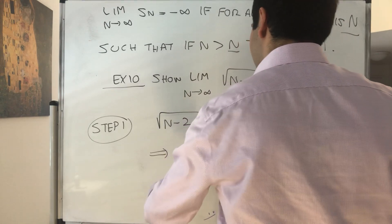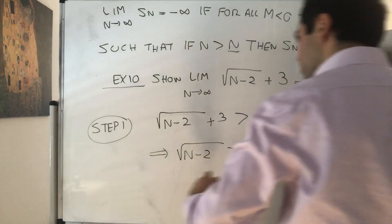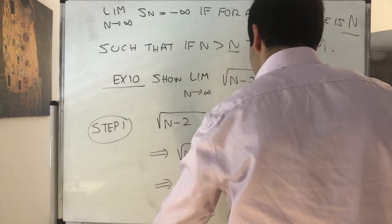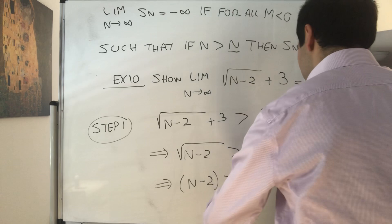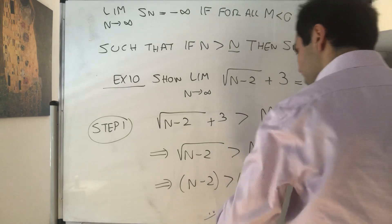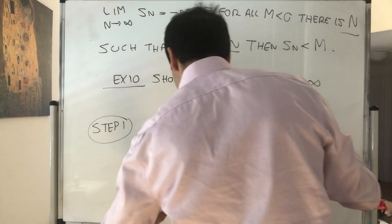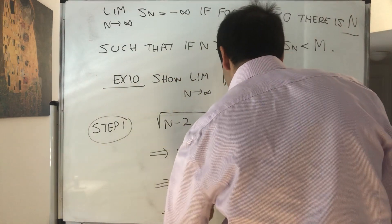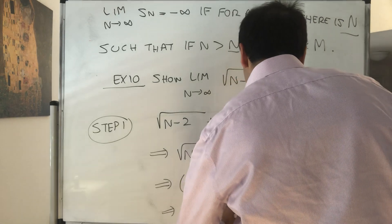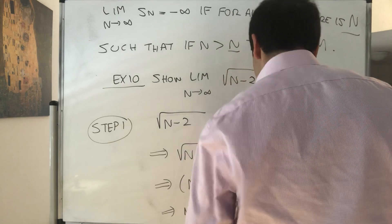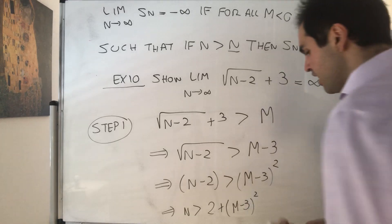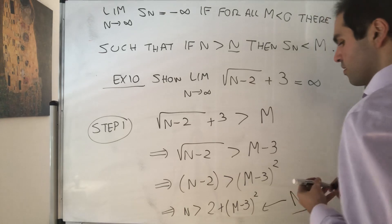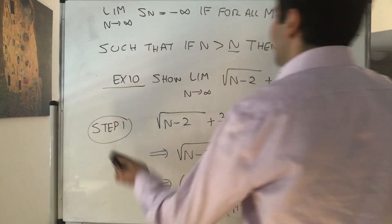So square root of n minus 2 is bigger than m minus 3, so n minus 2 is bigger than m minus 3 squared. And then n is bigger than 2 plus m minus 3 squared. Okay, very good, and it suggests to let capital N be that, but that's what we have to show.